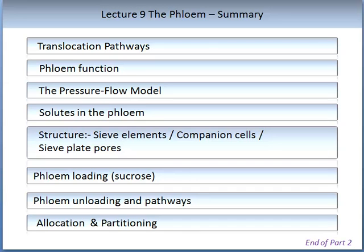After completing your recommended reading and watching the learning resources videos that accompany this lecture, you should have an understanding of the following: translocation pathways; flow and function; the pressure flow model and how it is applied; solutes in the phloem; the structure of the important sieve elements and companion cells as well as the sieve plate pores; the role of phloem loading; the role of phloem unloading and associated pathways; and allocation and partitioning. This last topic is particularly important as it is an essential driver of productivity in agriculture.